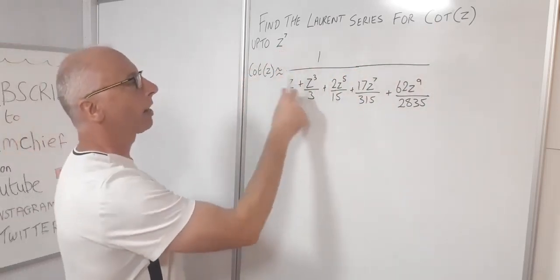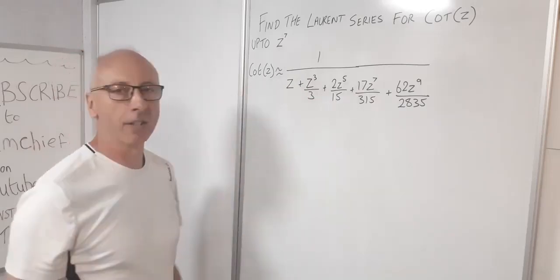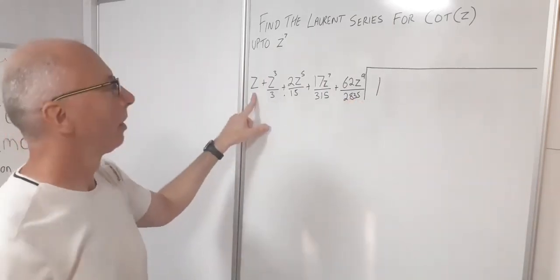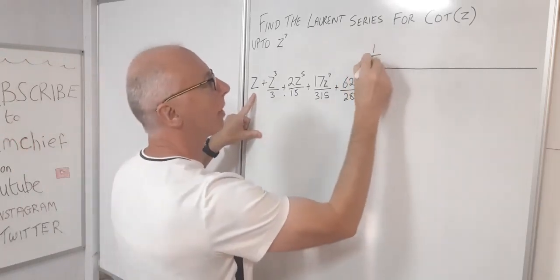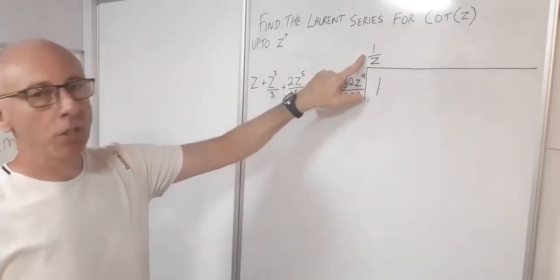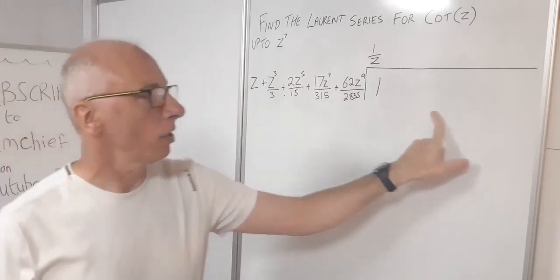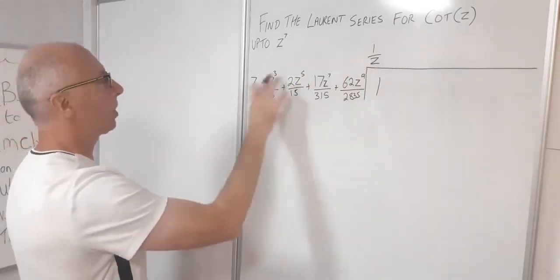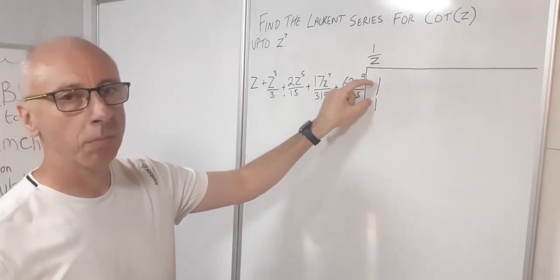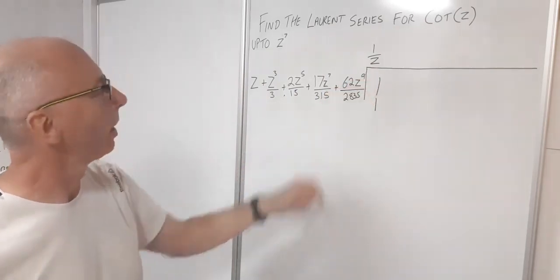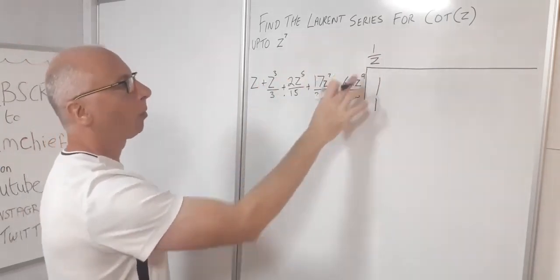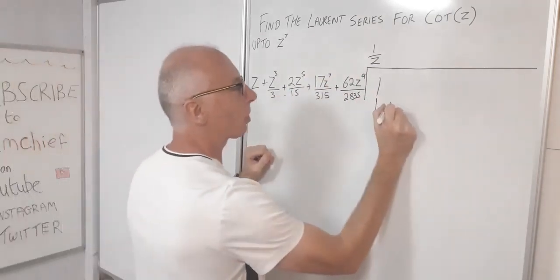Now I'm going to write this in long division format. The place to start is we take 1 divided by z, so we get 1/z as part of our answer. Now we distribute this 1/z with all of these terms. So 1/z times z gives 1, as expected. Then distributing 1/z with all the remaining terms just means dropping all the powers by 1 while the coefficients stay the same.